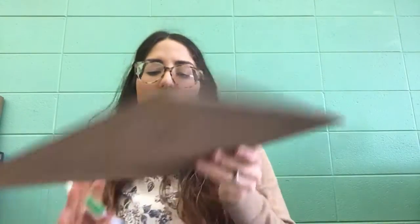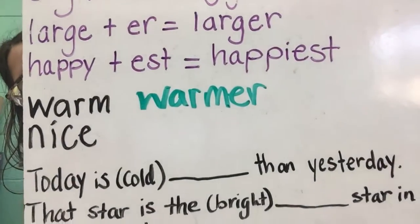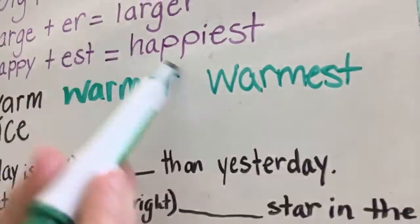Number one says 'warm.' We're going to add the suffix -er and -est. Write it down on your paper. You should have W-A-R-M-E-R — warmer. And then adding -est to that, you have warmest. You just add -est normally.